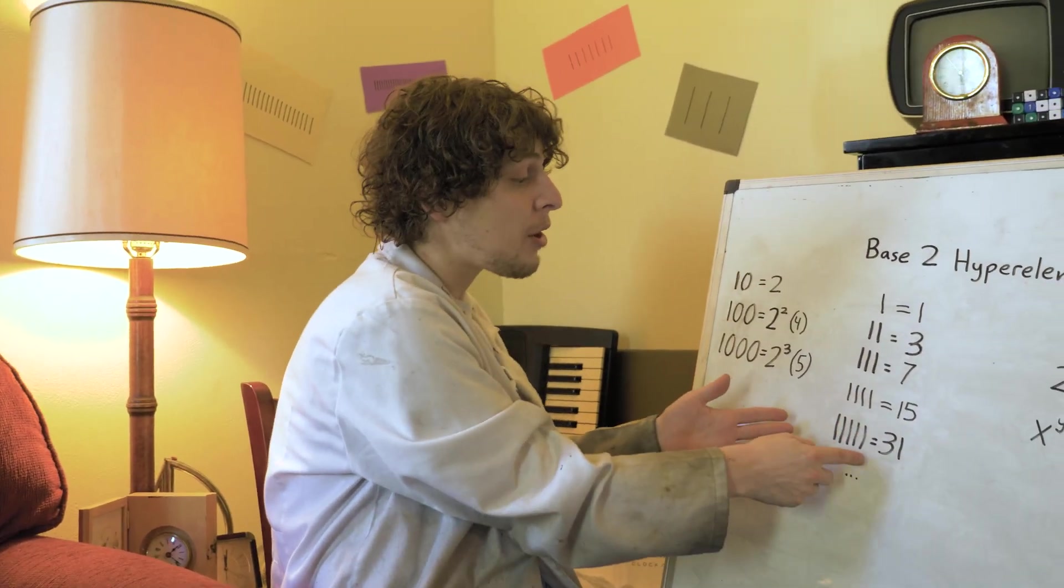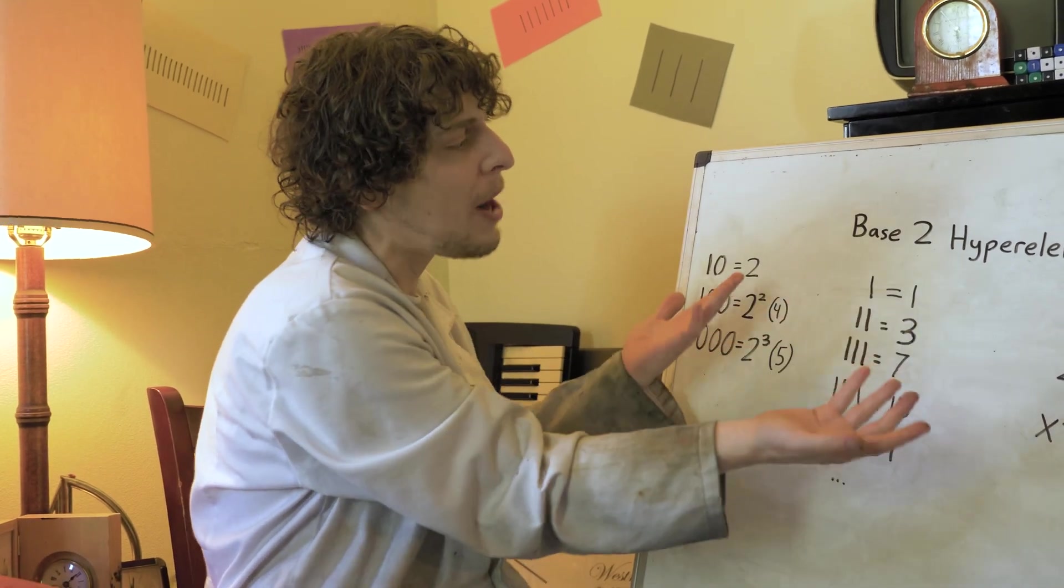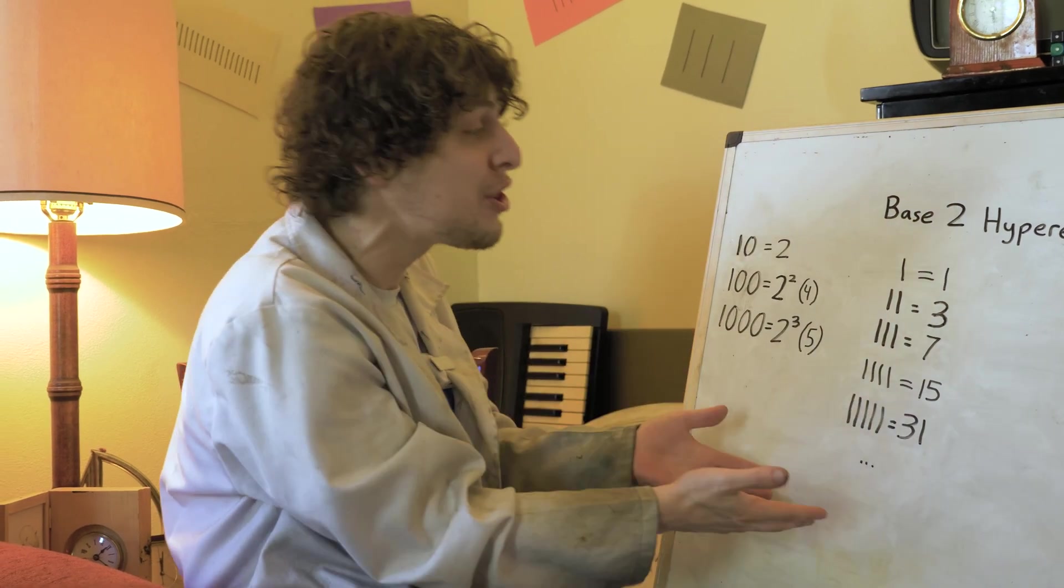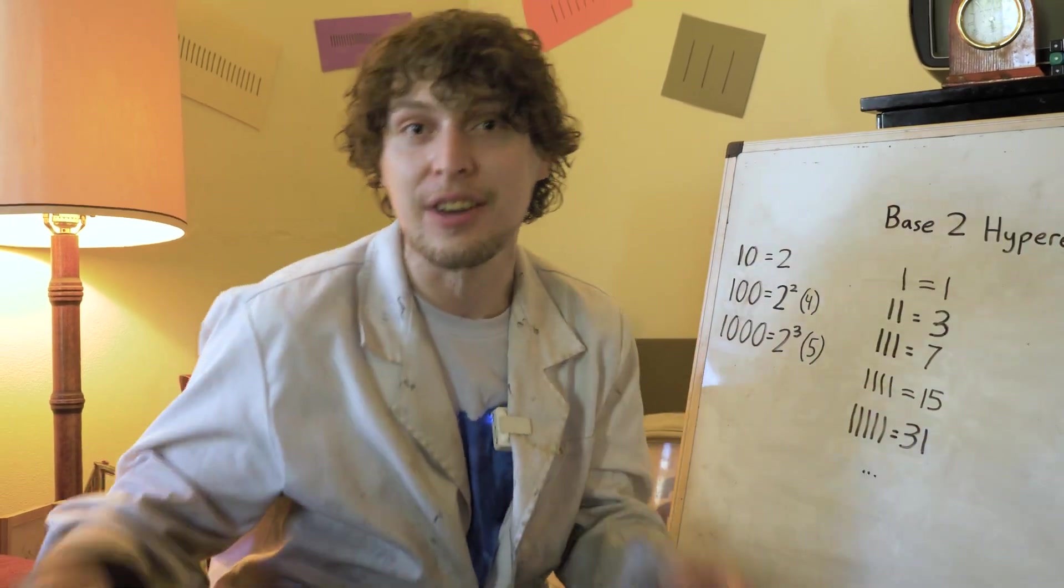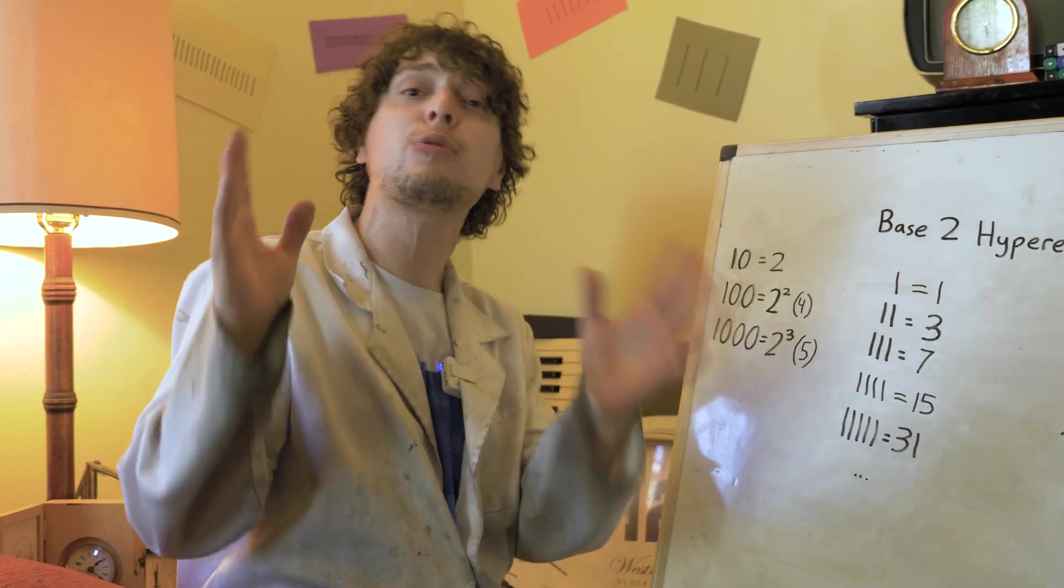These numbers, which are the sum of all the powers of two up through a point, including the zero with power of two, which is one, and are also one less than the next power of two are known as mersenne numbers. And they're super important in math. And they even show up surprising places.